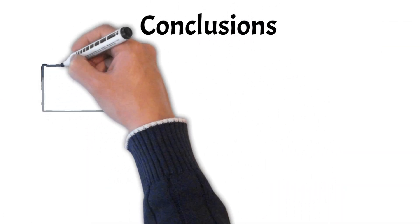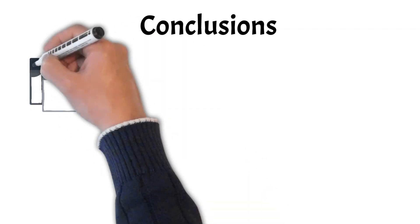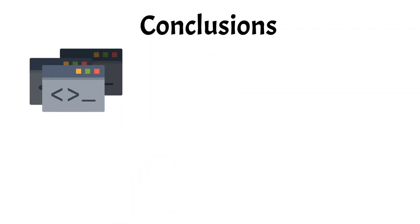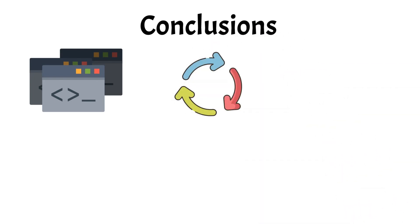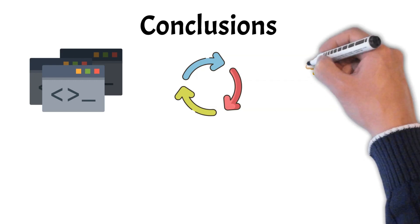By organizing code into modular units that encapsulate data and behavior, OOP promotes code reusability, flexibility, and scalability. This approach fosters cleaner, more maintainable code bases, which are crucial for large-scale projects and collaborative development environments.